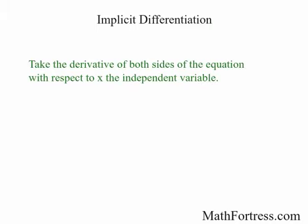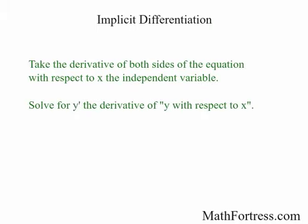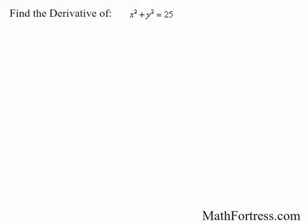Implicit differentiation consists of differentiating both sides of the equation with respect to x, and then solving the resulting equation for the derivative. Remember, whatever you do to one side, you have to do to the other side of the equal sign to maintain equality — a concept from Algebra 1. So the first step is to take the derivative of both sides.